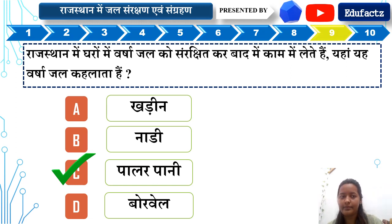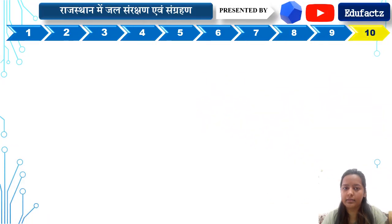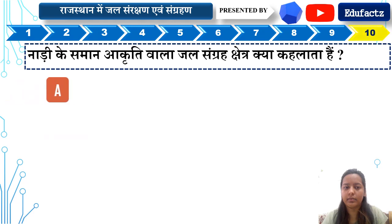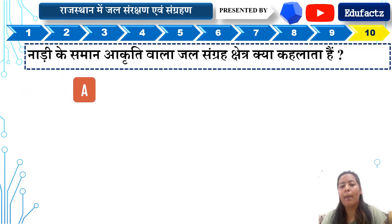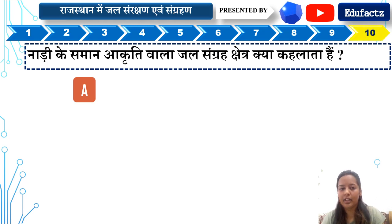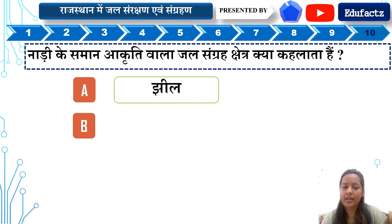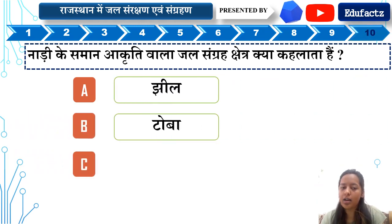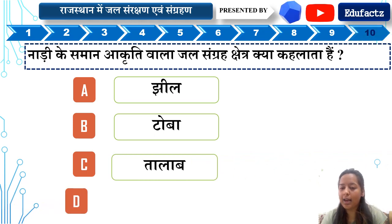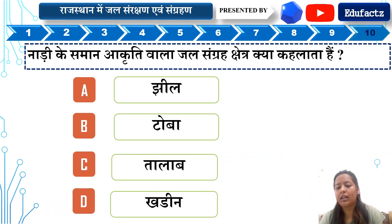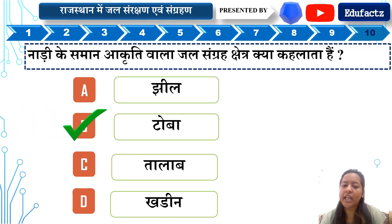Question 10: Nadi ke saman aakruti wala jal sangrah shetra kya kehlata hai? A — G, B — Toba, C — Talab, D — Khadil. Iska right answer is B — Toba.